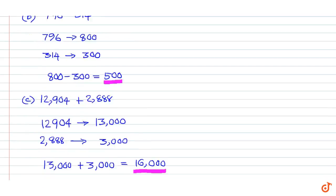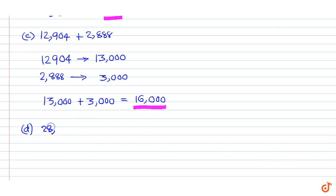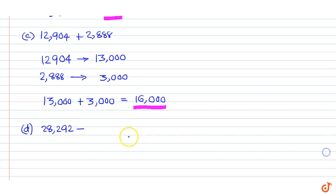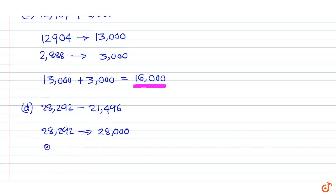28242 minus 21496. 28292 rounds off to 28000, 21496 rounds off to 21000.